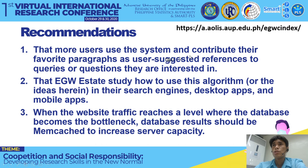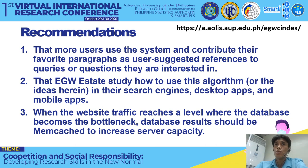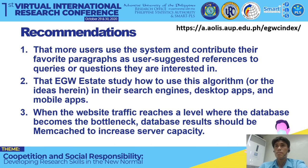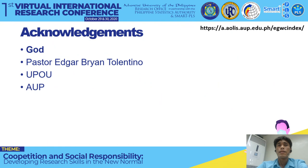Recommendations: more users should use the system so they can suggest more answers, improving quality and making the system more intelligent with experience. The EG White estate should consider using the algorithm for their search engines, desktop apps, and mobile apps. If the database becomes a bottleneck, memcached can be used to increase server capacity.